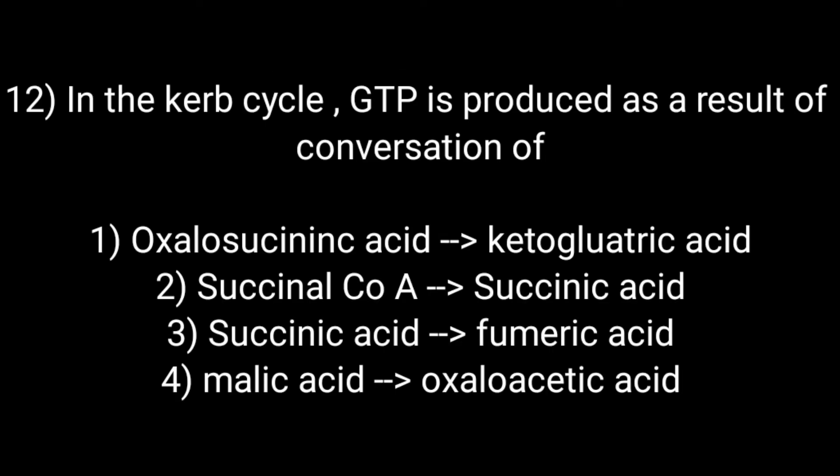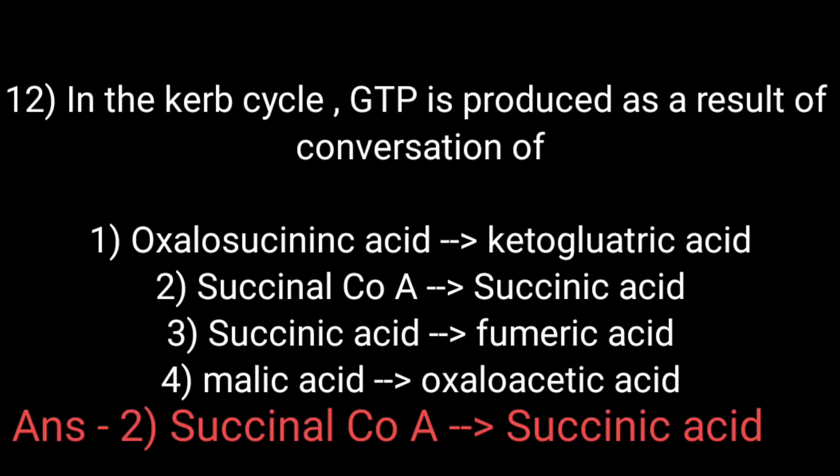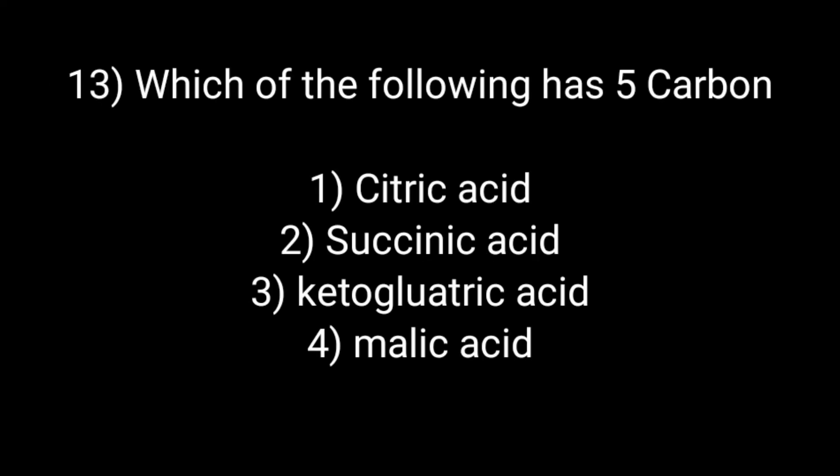In the Krebs cycle, GTP is produced as a result of conversion of: Option first: oxalosuccinic acid to ketoglutaric acid. Option second: succinyl coenzyme A to succinic acid. Option third: succinic acid to fumaric acid. And option fourth: malic acid to oxaloacetic acid. The correct answer is option second: succinyl coenzyme A to succinic acid.